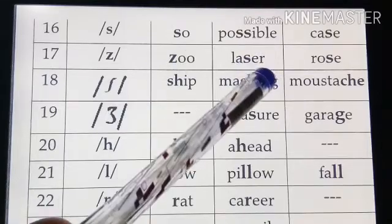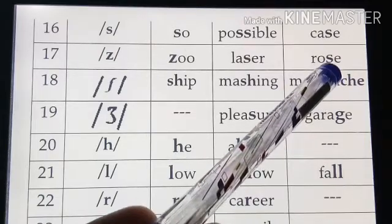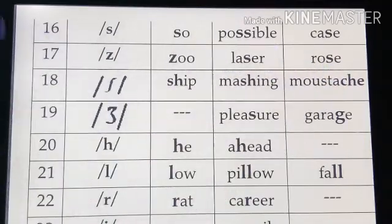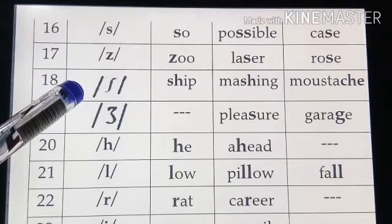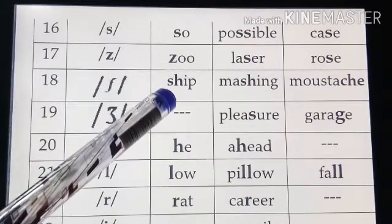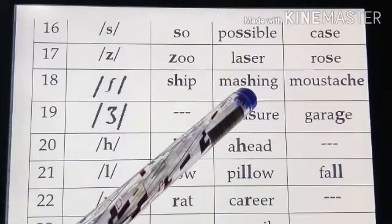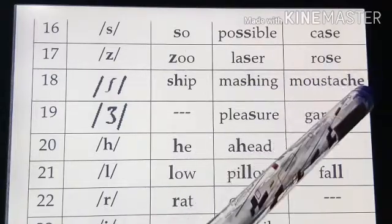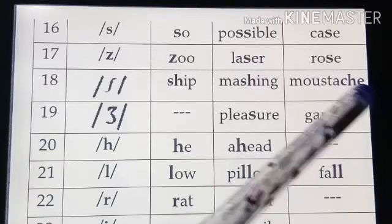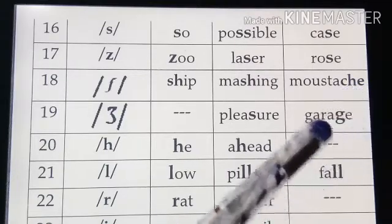The /z/ sound is in 'zoo', 'laser', 'rose'. Next, the eighteenth sound is /ʃ/ (sh). This is 'sha'. Examples: 'ship' (initial), 'mashing' (medial), 'mustache' — where the final 'ch' gives a /ʃ/ sound.